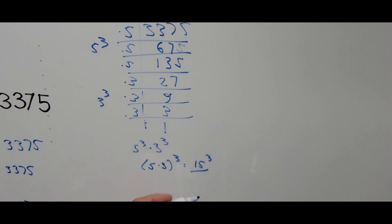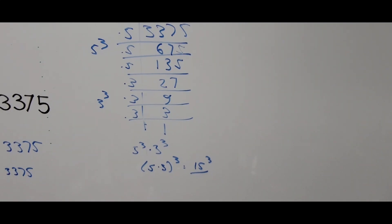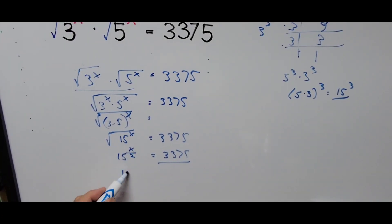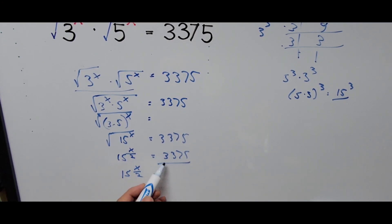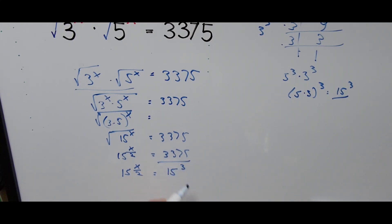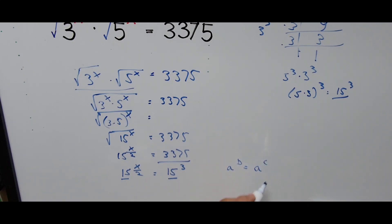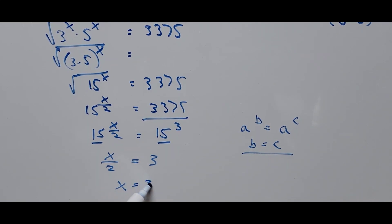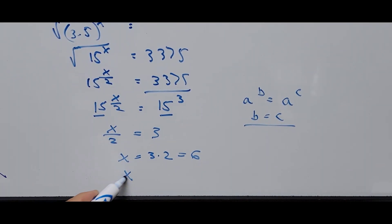Now substitute 15 cubed for 3375 in our equation: 15 to the power x over 2 equals 15 to the third power. Since we have the same base, we use the property that if a to the b equals a to the c, then b equals c. So x over 2 equals 3, therefore x equals 3 times 2, which is 6.